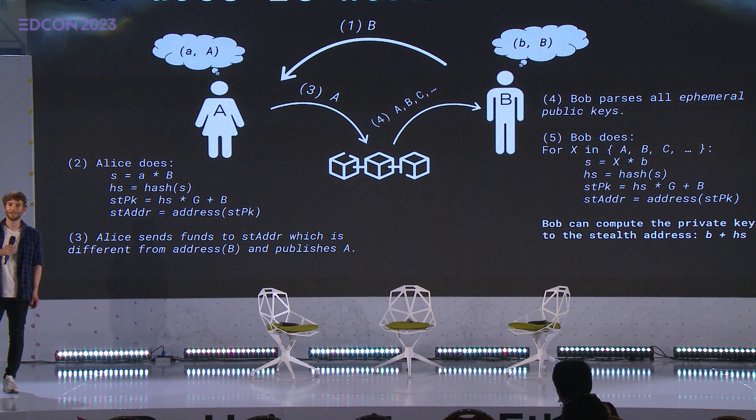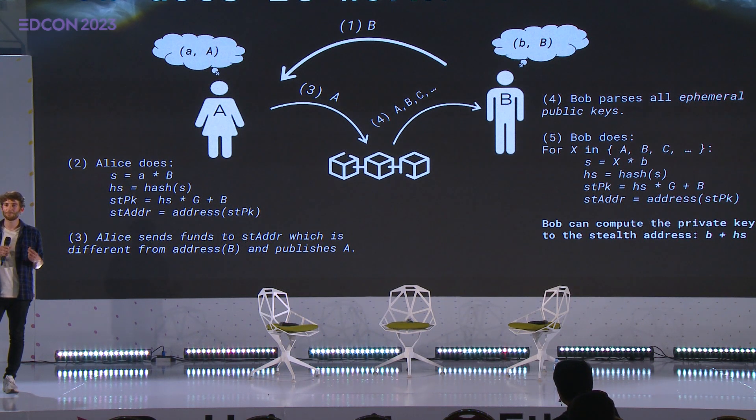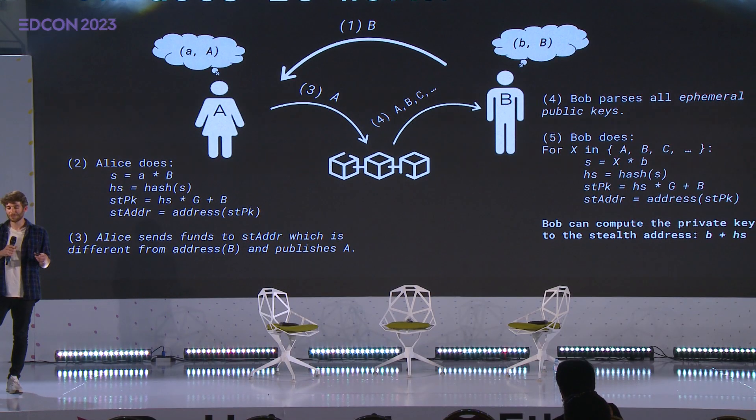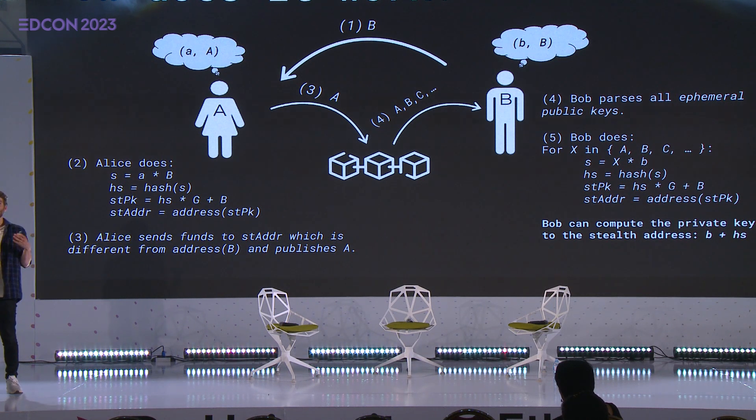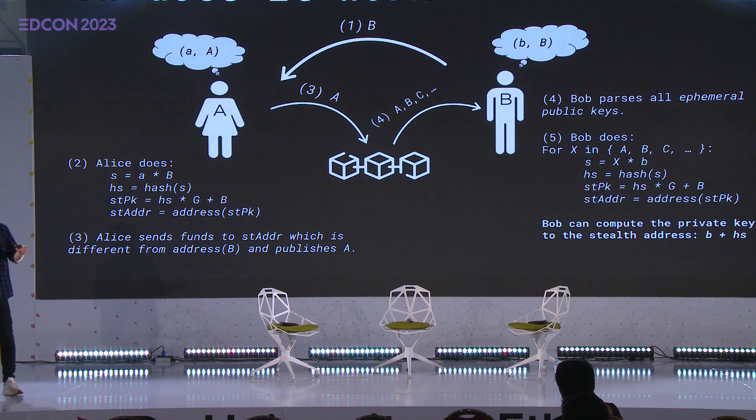Bob loops over all the ephemeral public keys, multiplies his own private key to each one, and does essentially the same as Alice but with his own public and private key. In the end he also has the value MHS, the hashed shared secret between both. Bob multiplies it with the generator point to get an elliptic curve coordinate, then adds his own public key to it. Bob can also derive the private key to that address: he takes his own private key and adds it to the hashed shared secret HS, deriving a new private key able to access the funds on the stealth address.